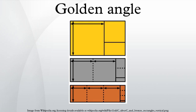Algebraically, let A plus B be the circumference of a circle, divided into a longer arc of length A and a smaller arc of length B such that the golden angle is then the angle subtended by the smaller arc of length B.